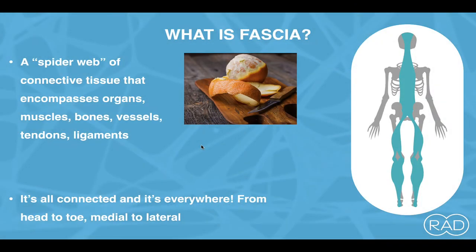So let's start with this thing called fascia that we've heard so much about. Fascia is a spider web of connective tissue that encompasses pretty much everything — organs, muscles, bones, vessels, tendons, ligaments. The stuff is everywhere, and it is literally all connected from head to toe, medial to lateral.